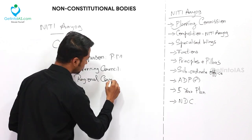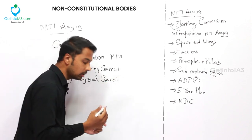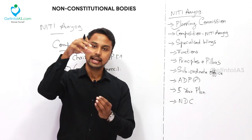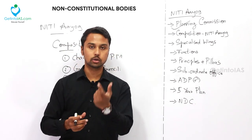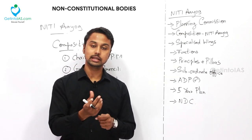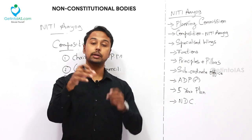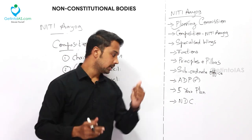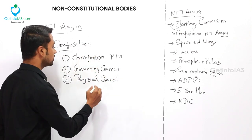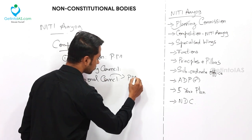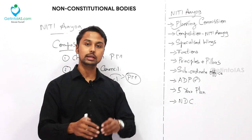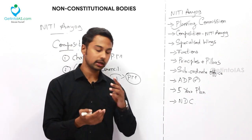Third is the Regional Councils. If there is a particular problem with a region or between states, NITI Aayog will form a Regional Council involving the Chief Ministers of those particular states. An important point for UPSC: Regional Councils are convened by the Prime Minister but comprise all the concerned state Chief Ministers.